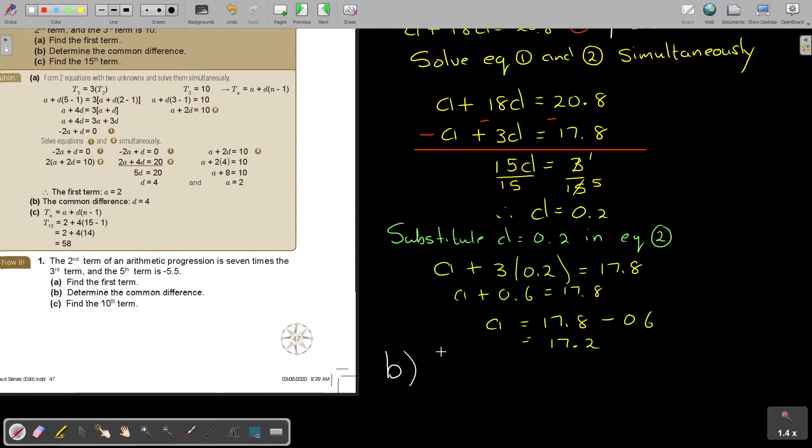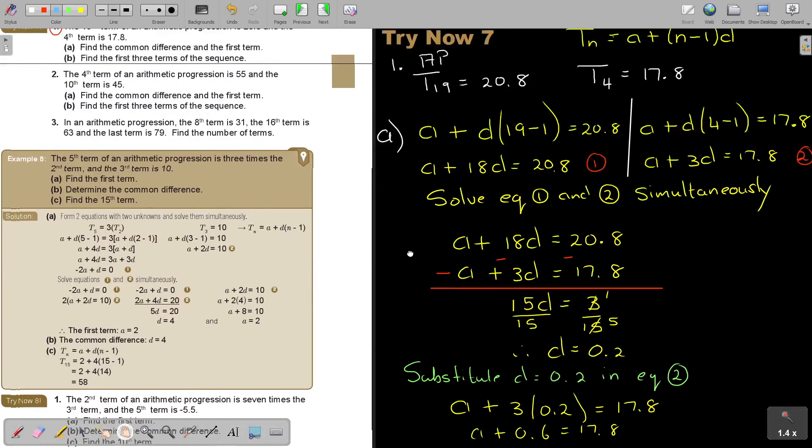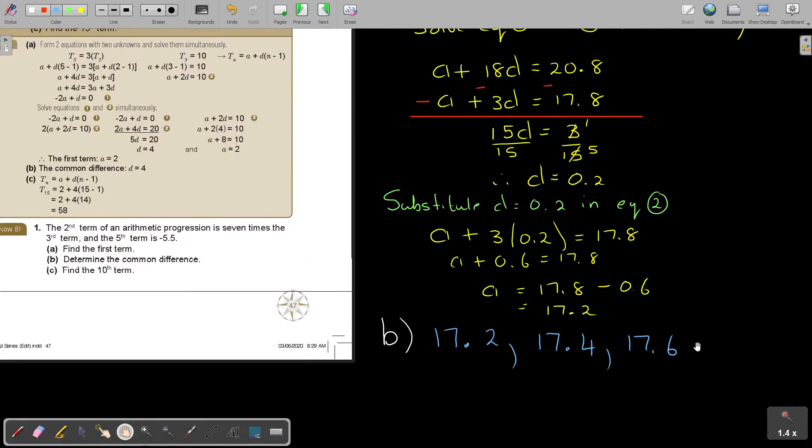So the first term will be 17.2. And now I'm just every time going to add that 0.2. So this will be 17.4 and the third term will be 17.6. And you don't have to, they actually don't ask the sequence. Let's just go back to the question. Find the first three terms of the sequence. Okay, that's the first three terms.